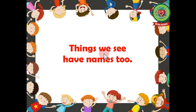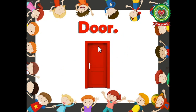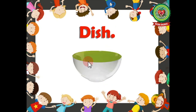In the same way, things we see around us have names too. What is this? Yes, by looking you can recognize that it is bread — b-r-e-a-d, bread — name of a thing, so noun. Door — d-o-o-r, door — name of a thing, so noun.